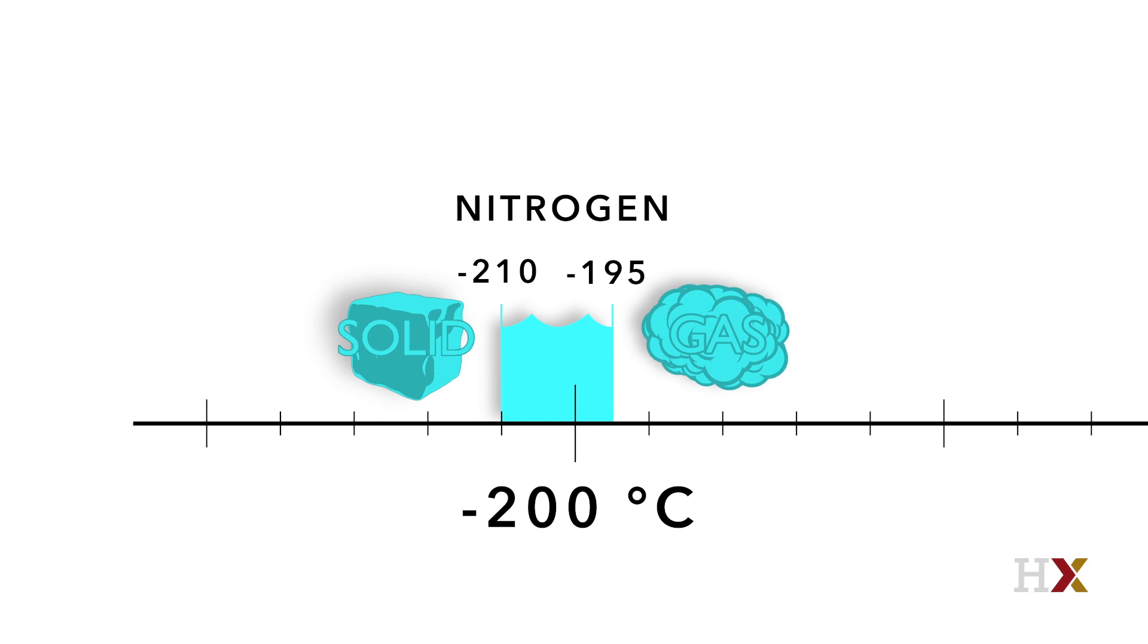So it's very, very cold. If you cool it a little more to about minus 210 degrees Celsius, then nitrogen will become a solid.